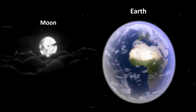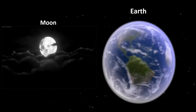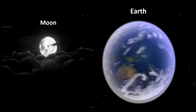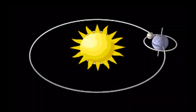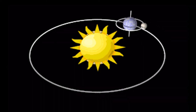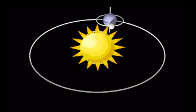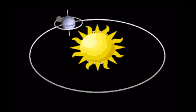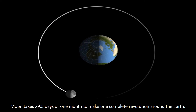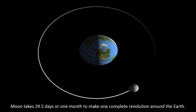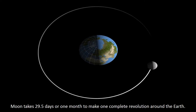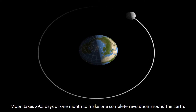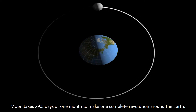Earth has one and only natural satellite, called Moon, or Luna. Like Earth that revolves around the Sun, Moon revolves around the Earth. Moon takes 29.5 days, or one month, to make one complete revolution around the Earth.